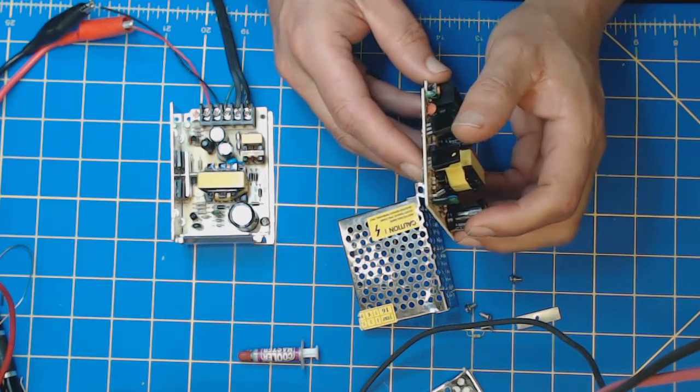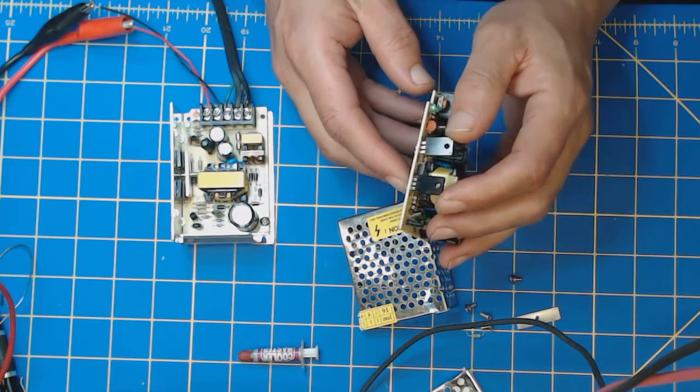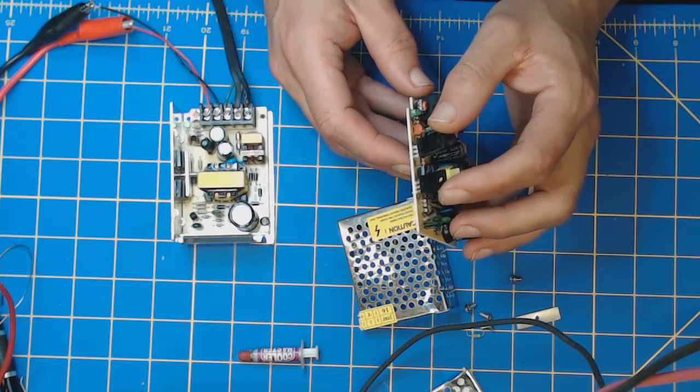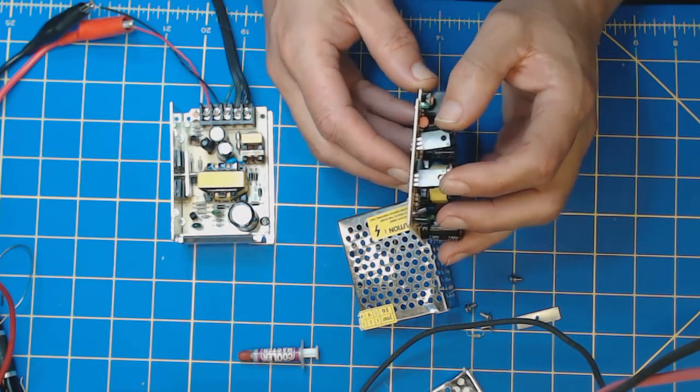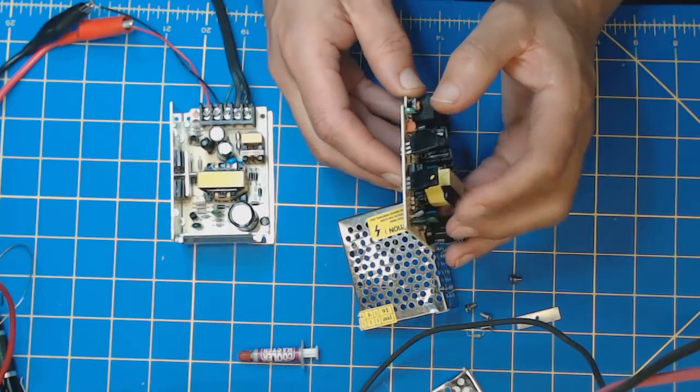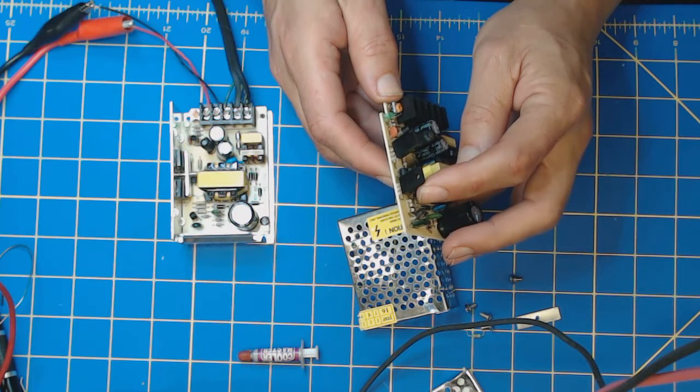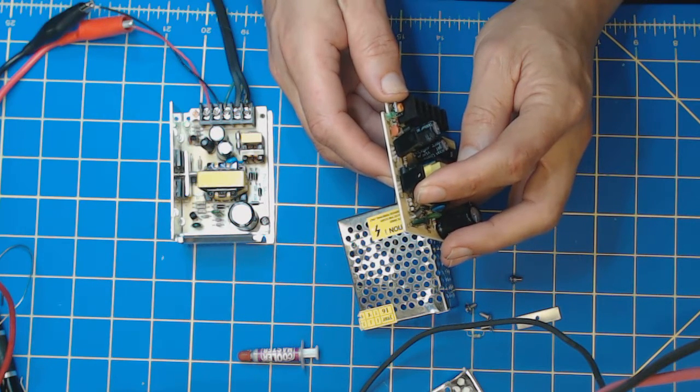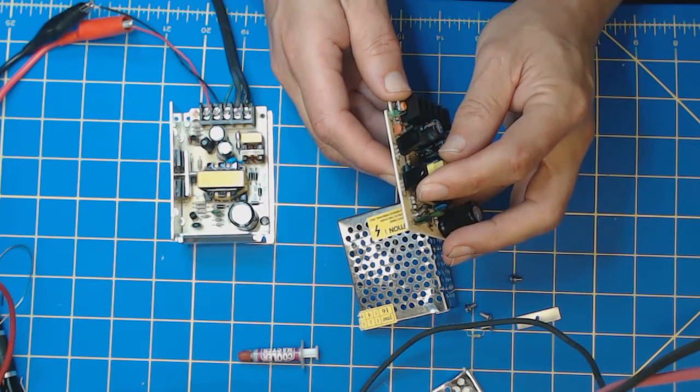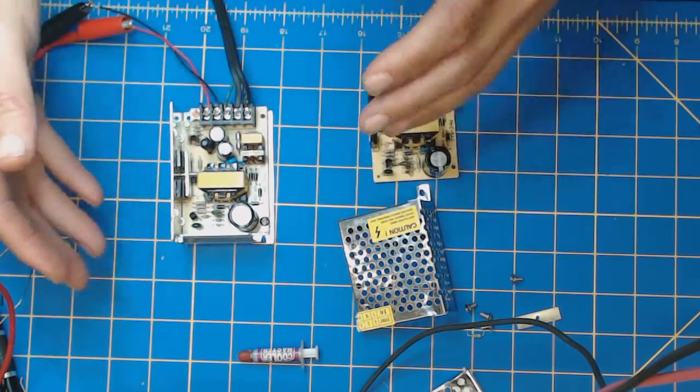When I measured them with the infrared thermal temperature sensor, this primary side one was running at about 140 degrees Fahrenheit, but the heat sink that it was attached to was only at about 99 degrees Fahrenheit.